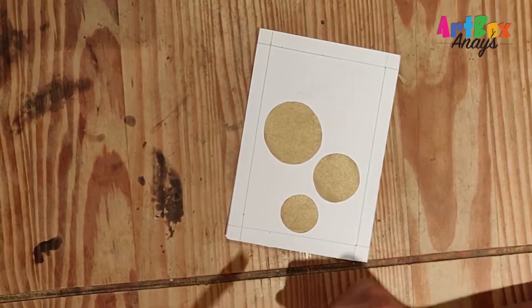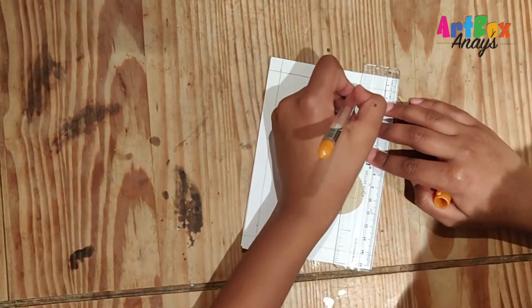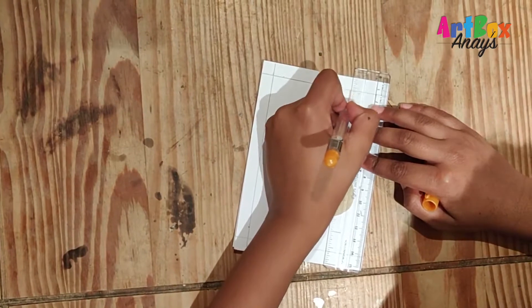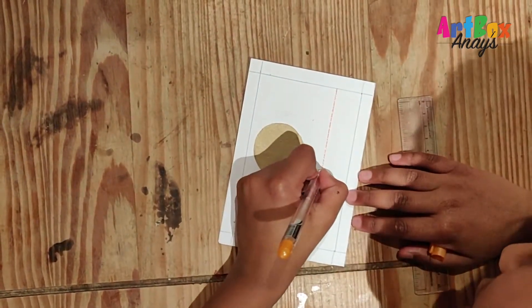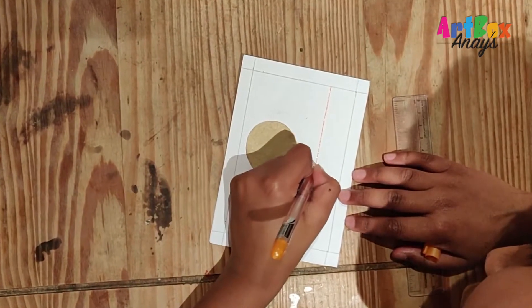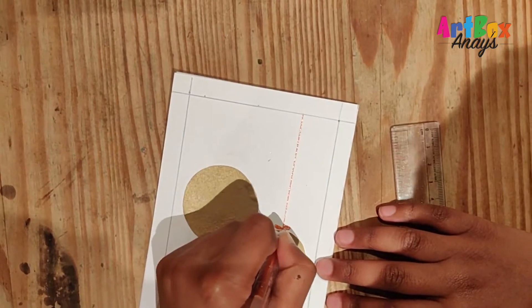Now what I'm going to do is I'm going to take my orange glitter pen and now just draw a line like this, and then like this.